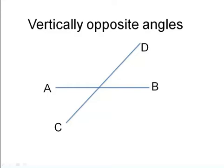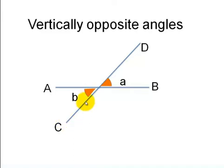Let us see how to identify vertically opposite angles. Assuming AB is a straight line and CD is another straight line, angle A is vertically opposite to angle B, so angle A and angle B are called vertically opposite angles. You can see that from D to B it forms a V shape, and similarly A to C forms another V shape.